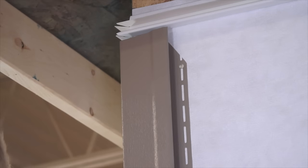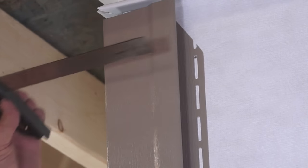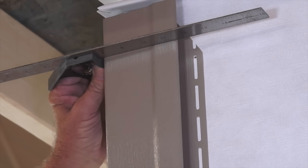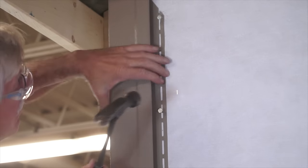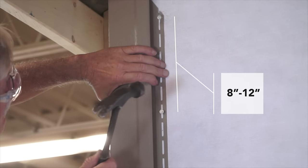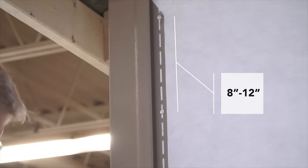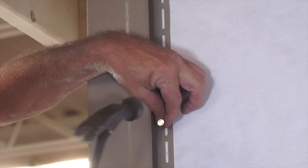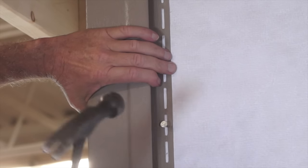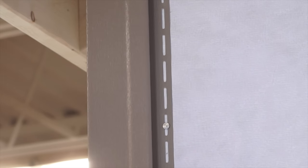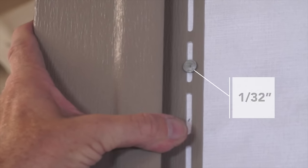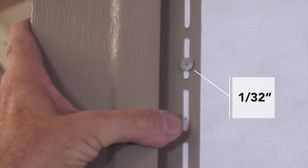This is one of the few times the nail goes at the top, not the middle, of the slot. Make sure to square the post while nailing. Continue nailing both sides of the corner post 8 to 12 inches apart in the center of the nail slots. Remember, drive nails straight and level and never nail tight. Leave a gap of approximately 1/32nd of an inch, about the thickness of a dime, between the fastener head and the corner post.